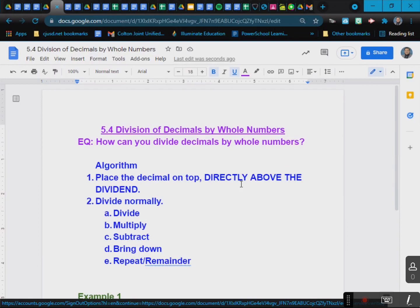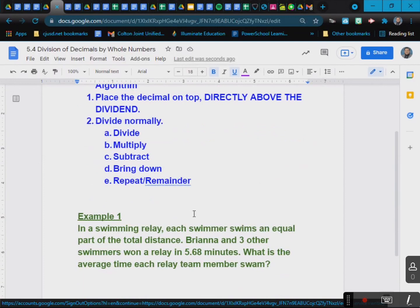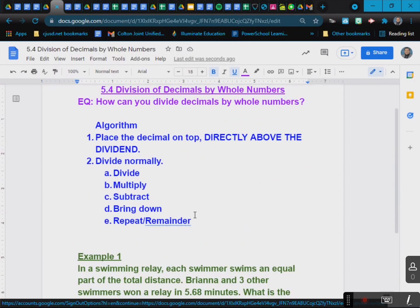So the algorithm is the same as before. Place the decimal on top, directly above the dividend, where that decimal is, that's where your decimal should be, directly above, and then divide normally. If you need to stop and pause to write down the steps in the essential question, please do so.